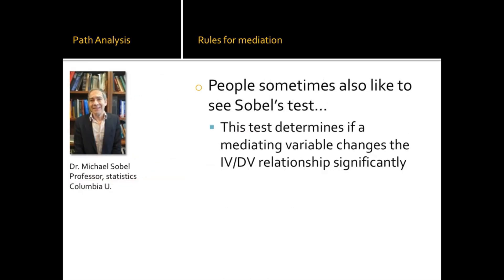So that's the traditional approach to mediation. People sometimes also like to see Sobel's test, created by Michael Sobel, who is still teaching at Columbia. This test determines if a mediating variable significantly changes the IV-DV relationship — in our example, textbook choice as IV and success as DV. If there is a significant change, it usually means beta one is going to change significantly as well. Sometimes people are satisfied with the traditional approach and don't need to see Sobel's test, but reviewers of your conference poster, paper submitted for publication, or your future PhD advisor may ask for it.